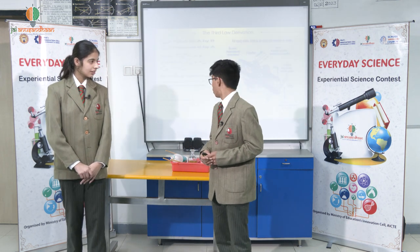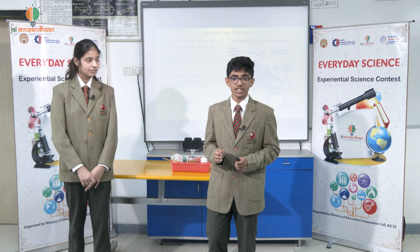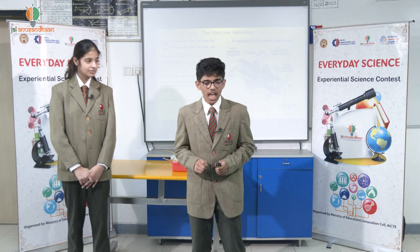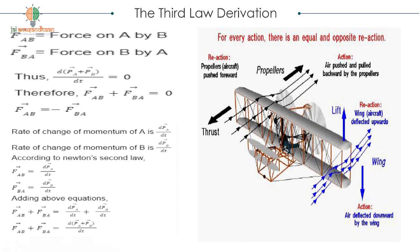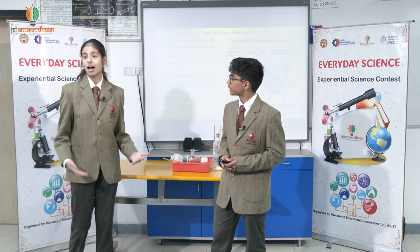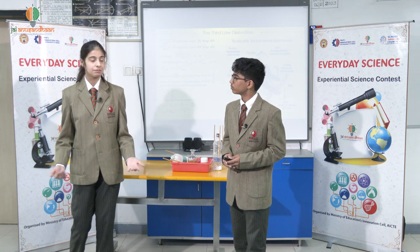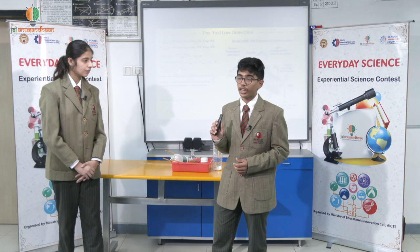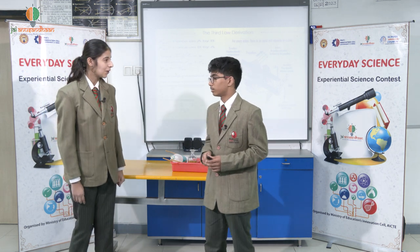I'm sure you must have all seen the Avengers movie. When Tony Stark puts on his suit, he's able to fly, and I'm sure you might wonder why. Well, after this presentation, you will be able to answer that question. When object A applies force F on object B, object B will apply an equal and opposite force on object A. This is the main principle of the third law of motion. The important points to remember are: the magnitude of both forces would be the same, the direction of the forces would be opposing each other, and they would be acting on different bodies.